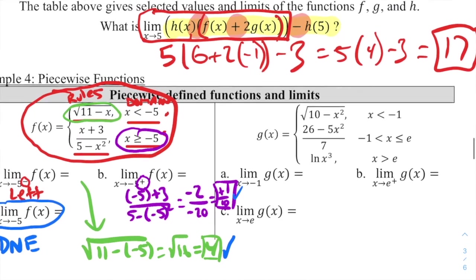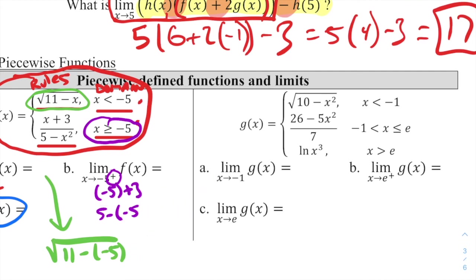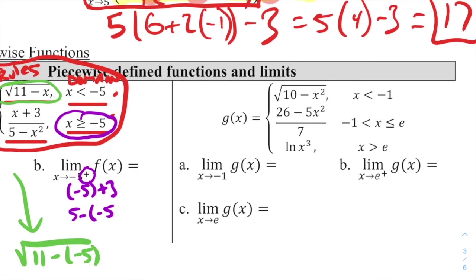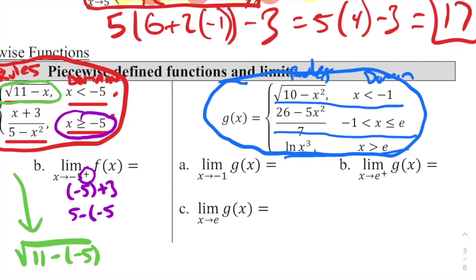Moving on to the second problem: the limit as x approaches −1 of g(x), where g(x) is a piecewise function with three rules. The first rule applies when x < −1, the second when −1 ≤ x ≤ e, and the third — ln(x³) — when x > e. We need to pay attention to which rule applies for each limit.